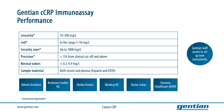You will find all specific ranges in the application notes, and Gentian has validated the assay on a wide range of analyzers including Abbott, Beckman Coulter, Horiba, Mindray, Roche, and Siemens. Apart from the already available applications, Gentian will also assist you to set up the canine CRP assay on your instrument.